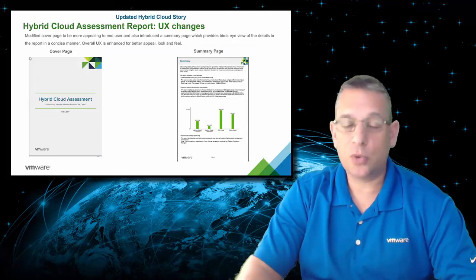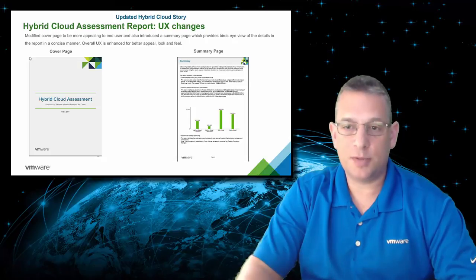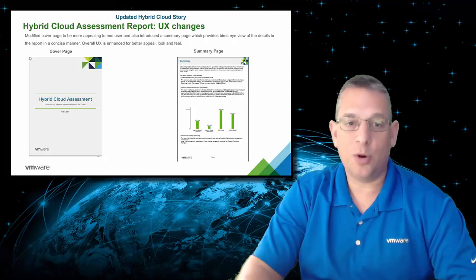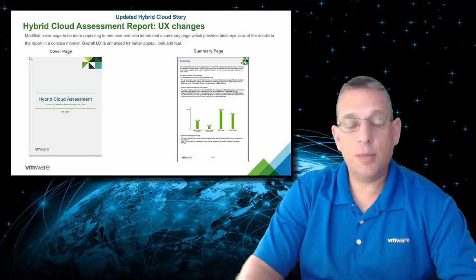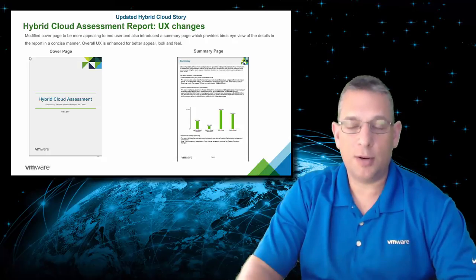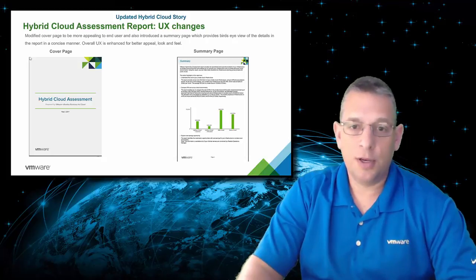Under the updated hybrid cloud story category, VMware's new hybrid cloud assessment uses the updated VRealize Business for Cloud version 7.2.1. This provides cloud cost comparison between your private cloud and potential costs for public cloud environments. This ensures you have your workloads in the most cost-effective environment — whether it's more cost-effective to keep workloads in a private cloud locally in your data center, or to put them into a public cloud. That may vary from workload to workload, or apply to your entire data center and all your VMs, or just some of them.